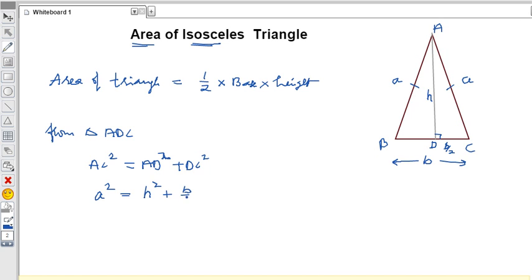From this we'll find the h value. So h² equals a² minus (b/2)². If we simplify this, h² equals a² - b²/4.